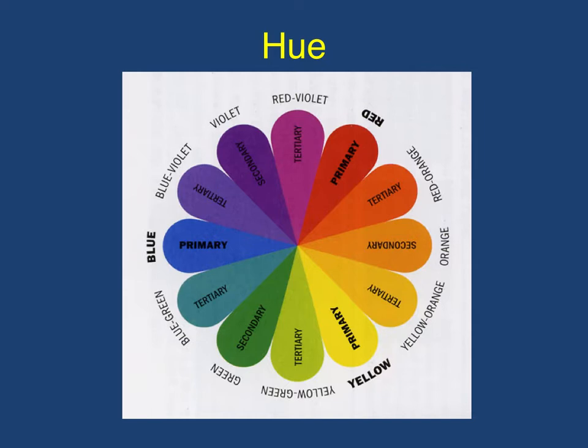Then we also have what are called complementary colors — colors that are directly across from each other on a color wheel. These are colors that the human eye tends to find pleasing as they go together, like red and green at Christmas. Think of some of your favorite sports teams — a lot of times their colors are going to be complementary colors. When we mix equal parts of complementary colors together, such as equal parts of red and equal parts of green, this would result in gray.